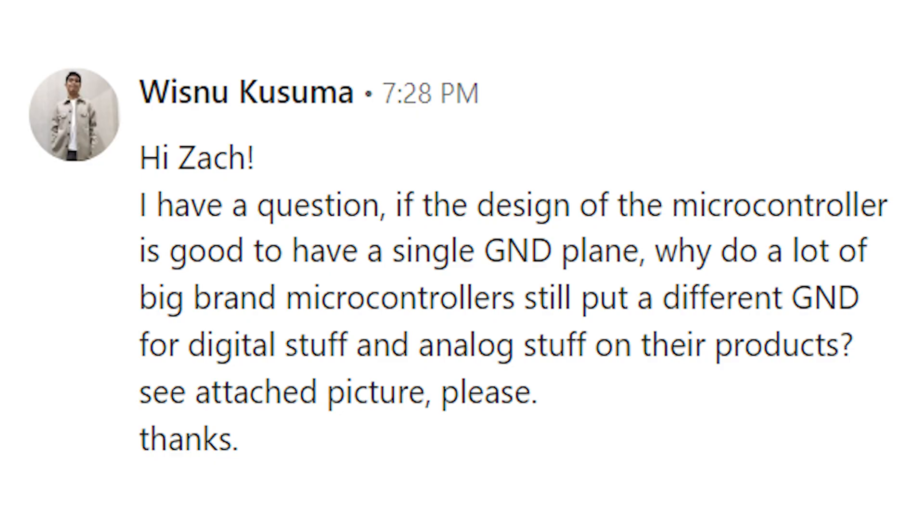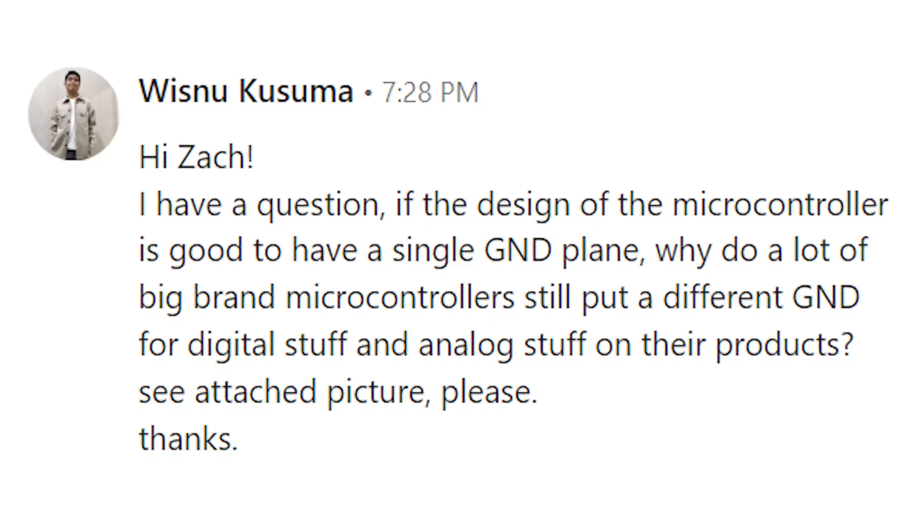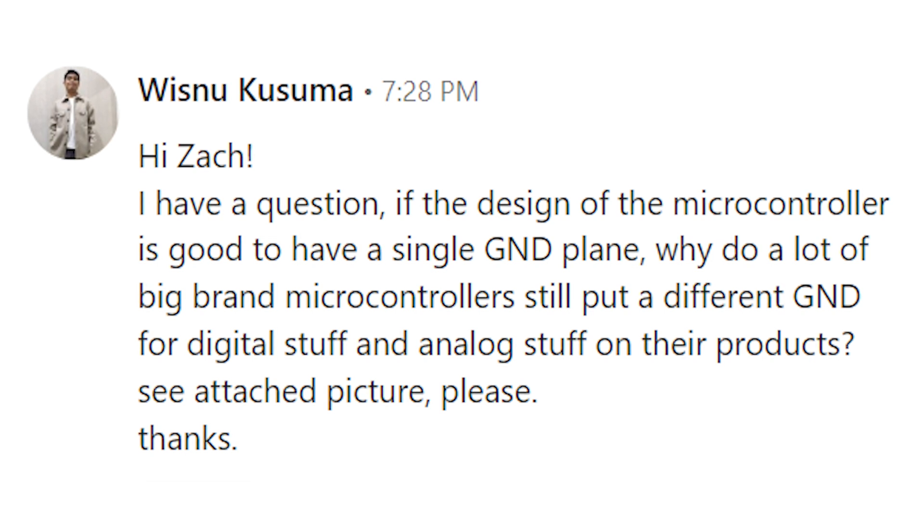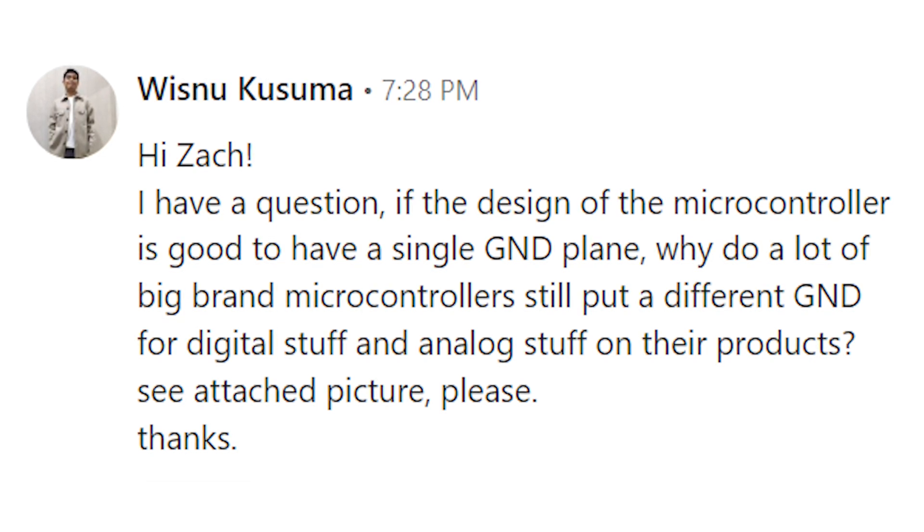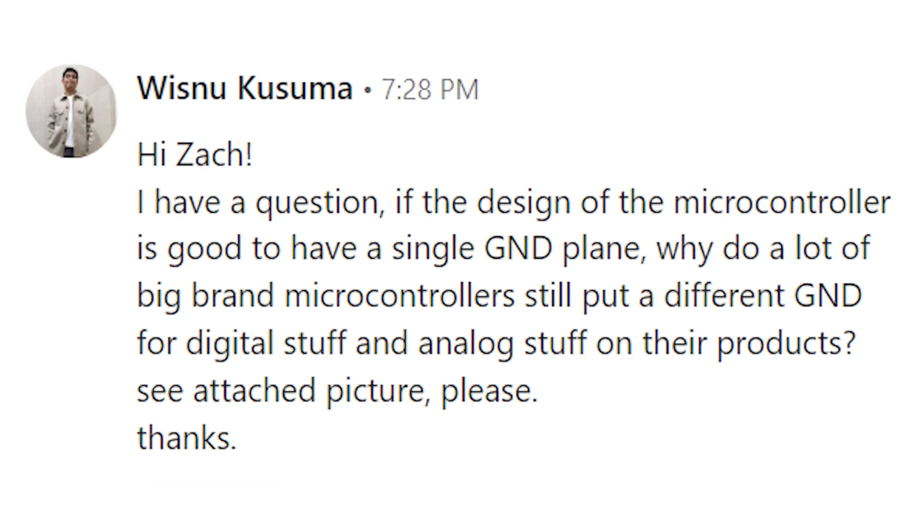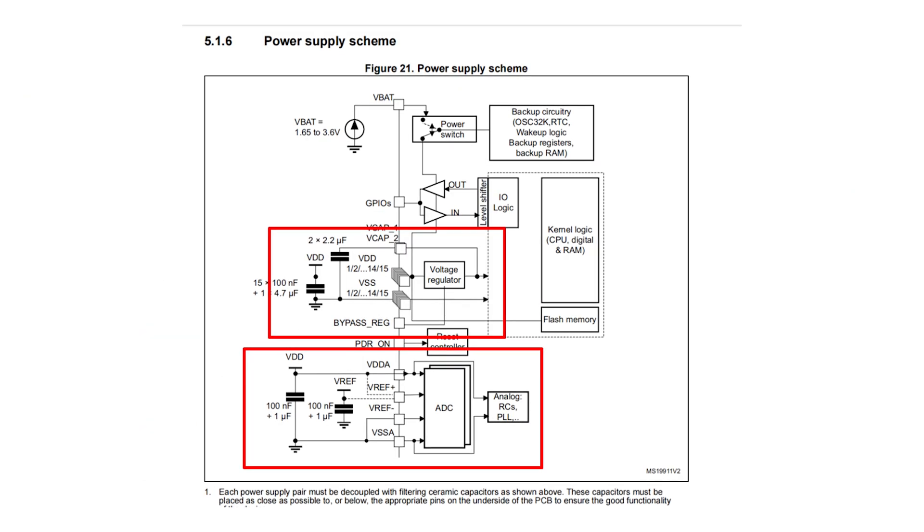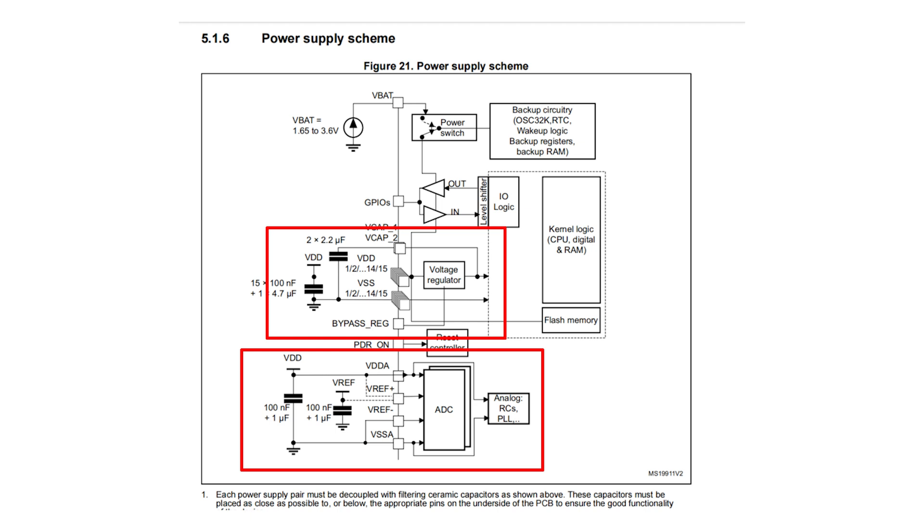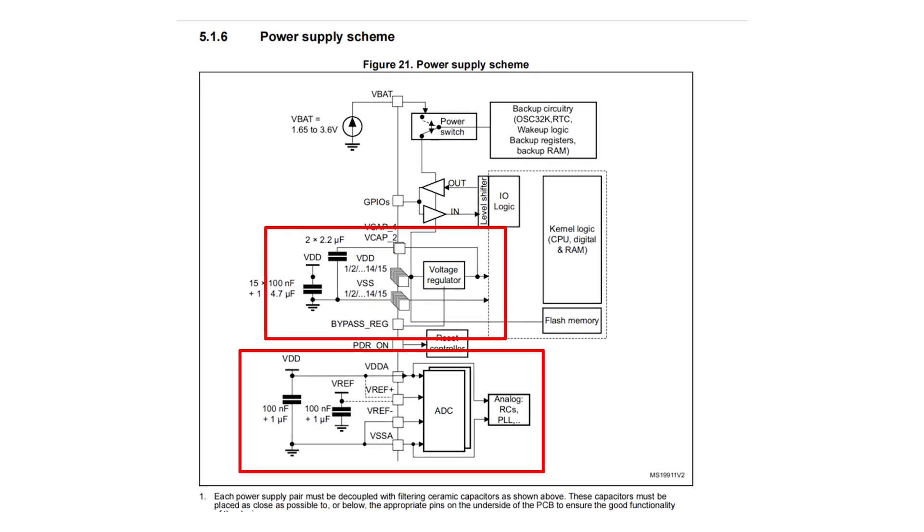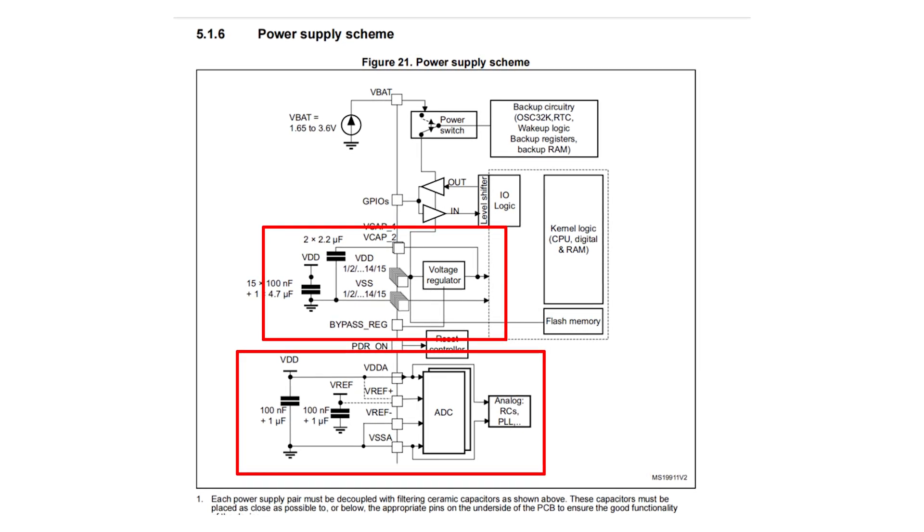So as I mentioned in the introduction, sometimes if you look on some microcontrollers you will see different names for different ground pins. This all came about from a viewer question that I received on my LinkedIn. Let's take a look. Wisnu Kusama writes, Hi Zach, I have a question. If the design of a microcontroller it is good to have a single ground plane, why do a lot of big brand microcontrollers still put different ground for digital stuff and analog stuff on their products? See the attached picture, please. Thanks. Then he went ahead and showed this picture. Now this picture is from an STM32 datasheet and you can very clearly see that we have a couple different names for ground nets in this image. So what's the deal with the different pin naming? Well, let's go ahead and take a look.